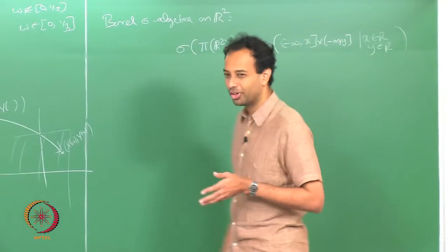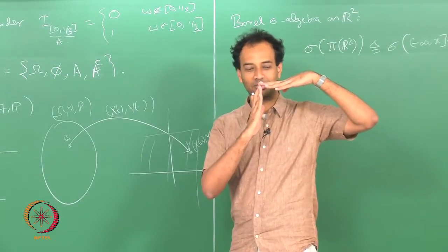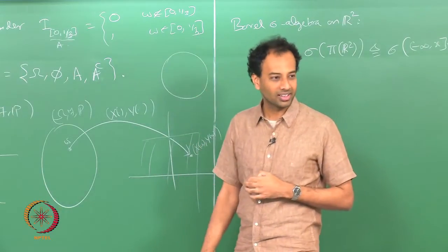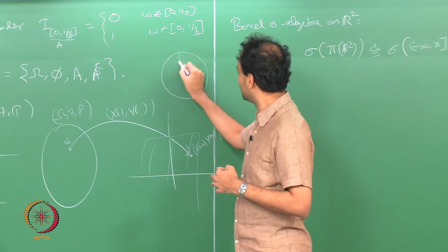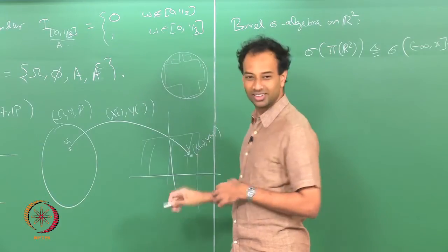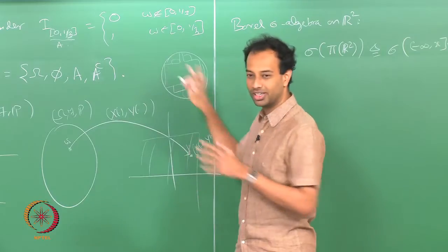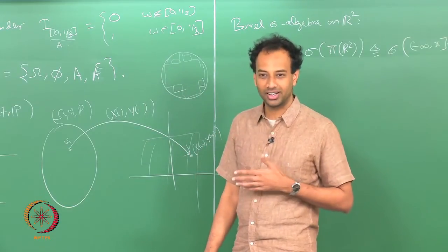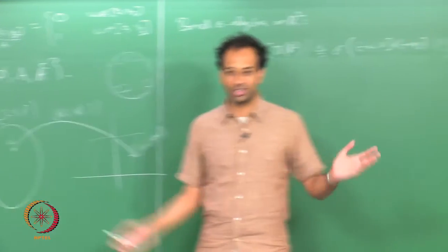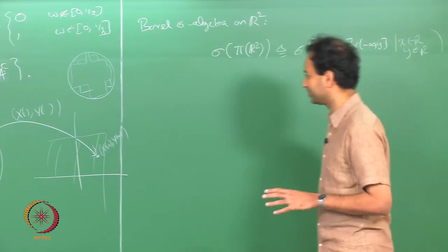The generating class we will consider is semi-infinite rectangles: sets of the form (−∞, x] × (−∞, y]. The Borel sigma algebra on ℝ² is the sigma algebra generated by this pi system of semi-infinite rectangles. You take sets of that form, take countable intersections, unions, and complements, and the collection of sets you get is the Borel sigma algebra on ℝ². The logic is exactly the same as for the real line.